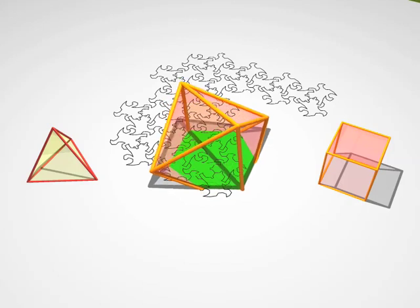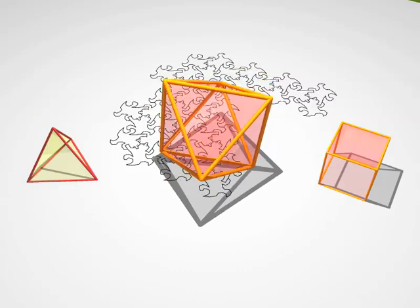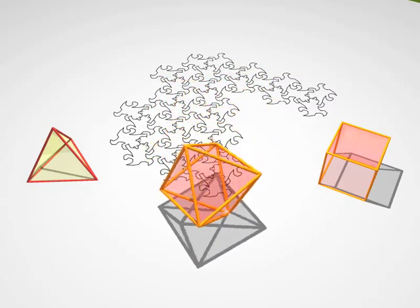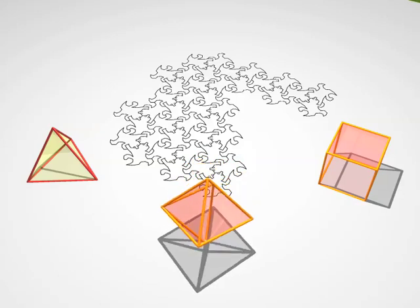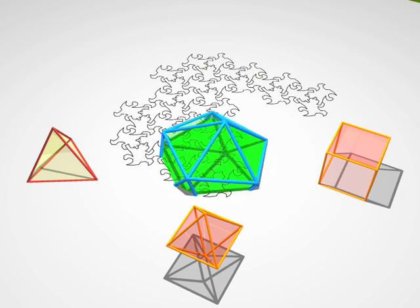An octahedron with its eight faces. And an icosahedron, it's a solid with 20 faces.